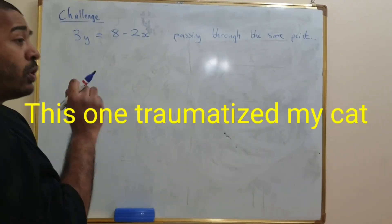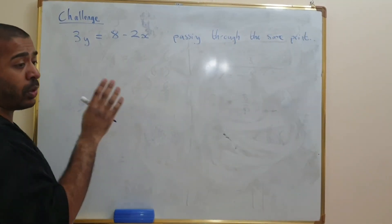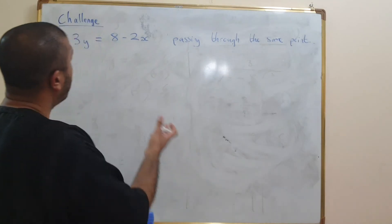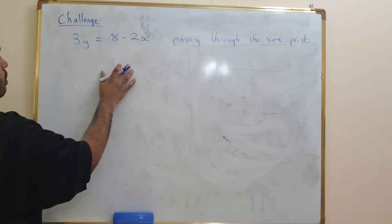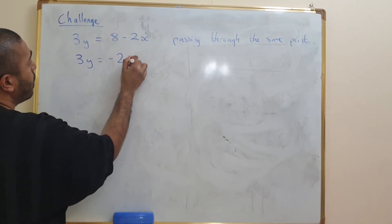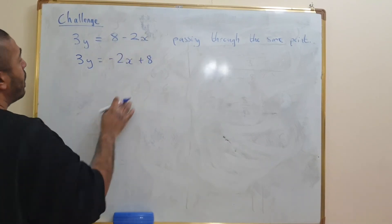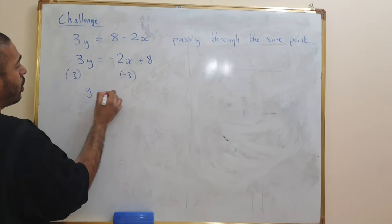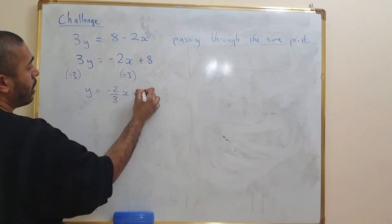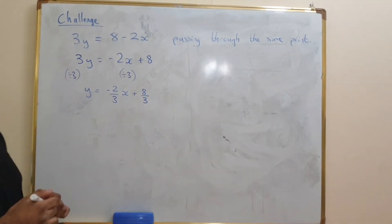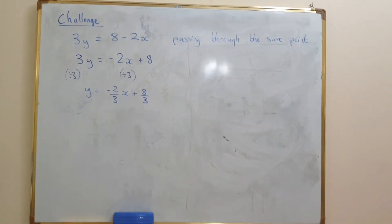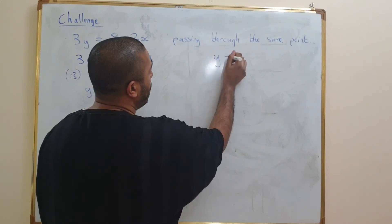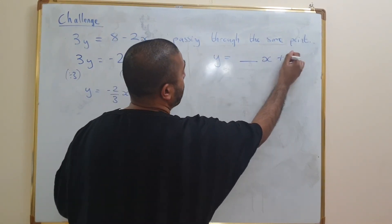Moving on to the final challenge question: find the equation of the line perpendicular to 3y equals 8 minus 2x and passing through the same point. We don't know where this line passes through the y-axis, so we rearrange first. 3y equals minus 2x plus 8. Dividing by 3 gives y equals negative 2 thirds x plus 8 thirds. So we know this line is going to be y equals something x plus 8 thirds — it passes through the same y-intercept.